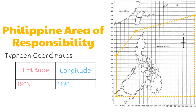Now how about if the typhoon is at 19 degrees north and 117 degrees east — is it within the PAR? 19 degrees north is here and 117 degrees east is here. When we intersect these points we can see that it is still outside the Philippine Area of Responsibility.